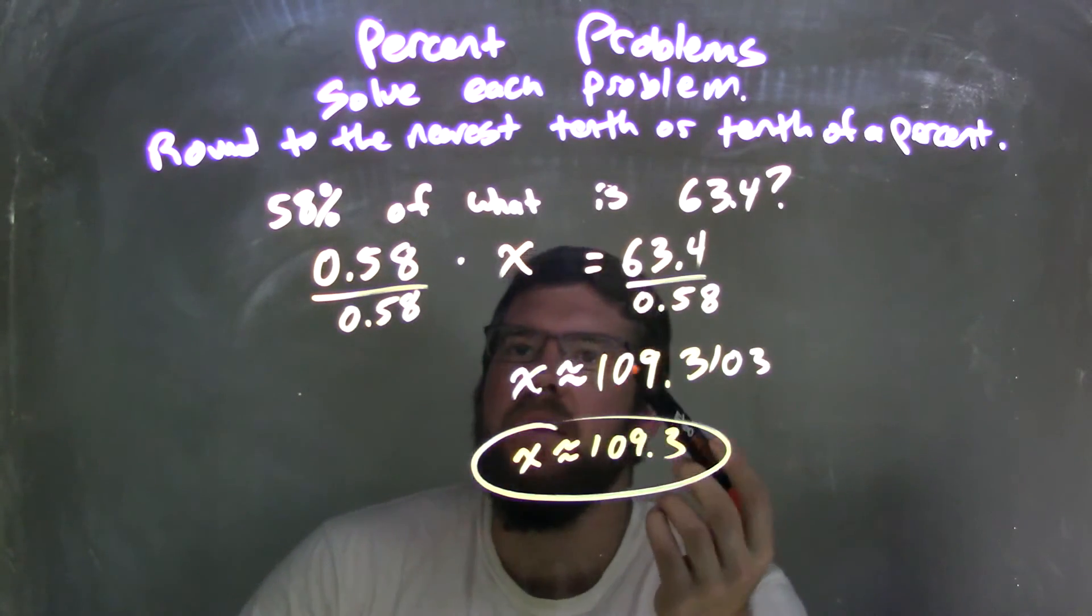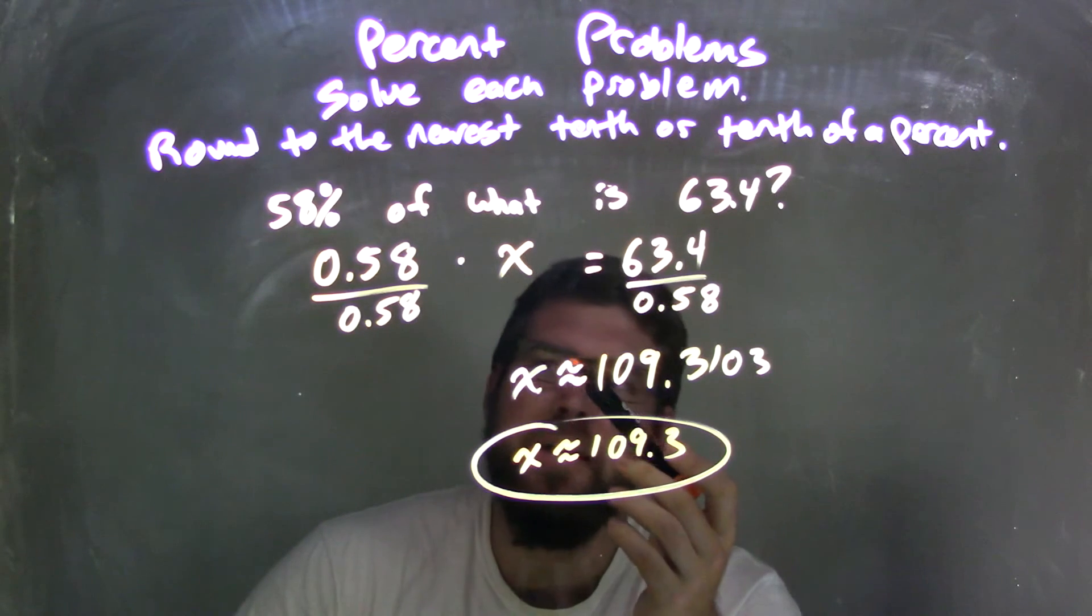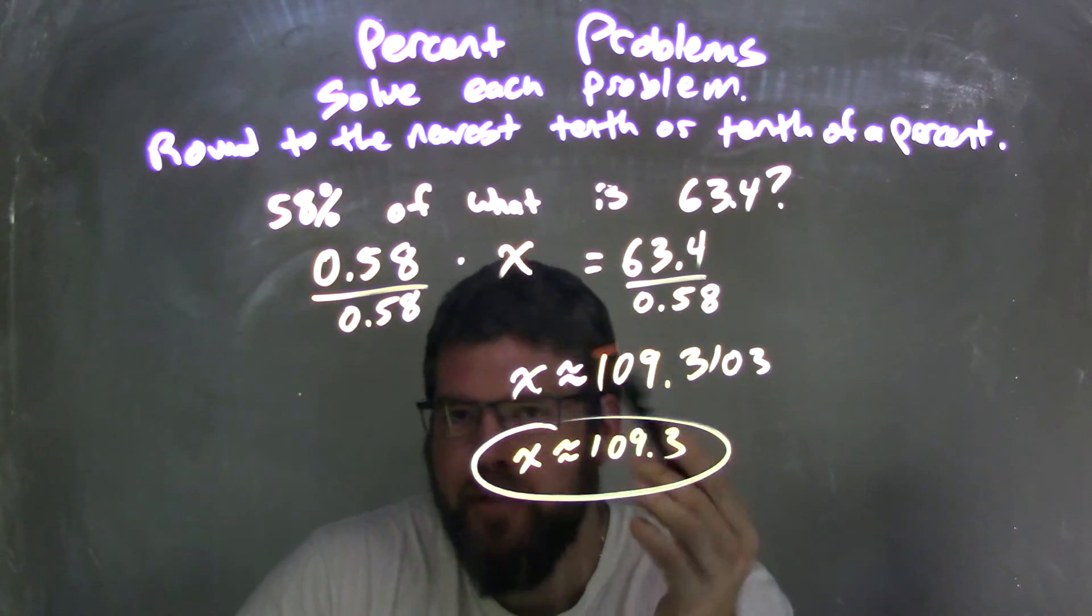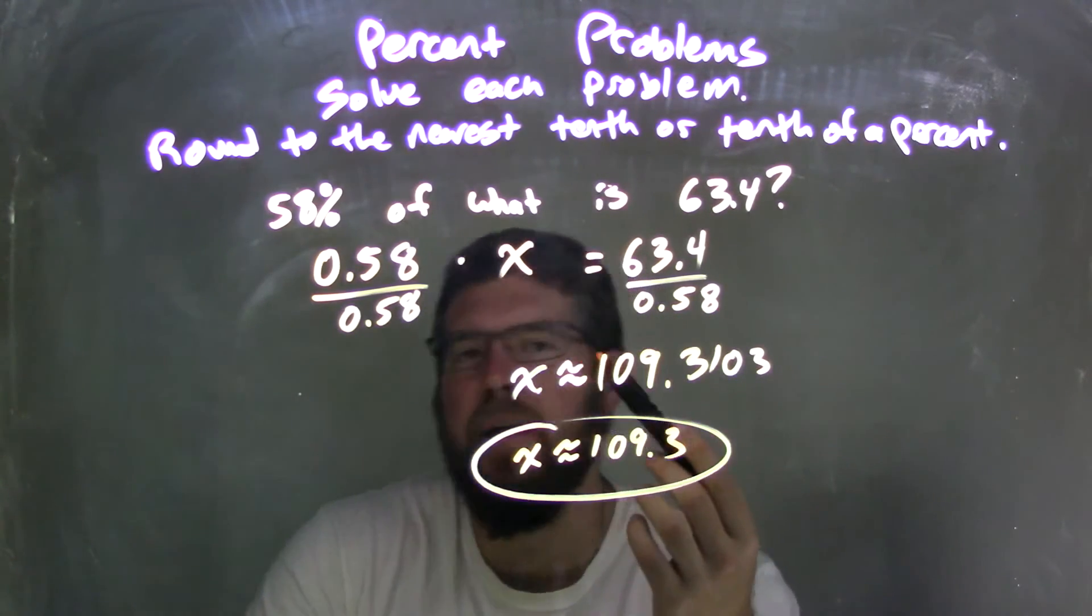So as a recap, I took that 58%, converted it to a decimal, and multiplied it. So 58% of what? Putting the variable x in, which is x here.